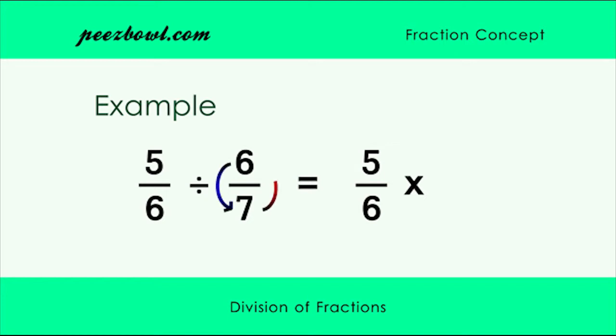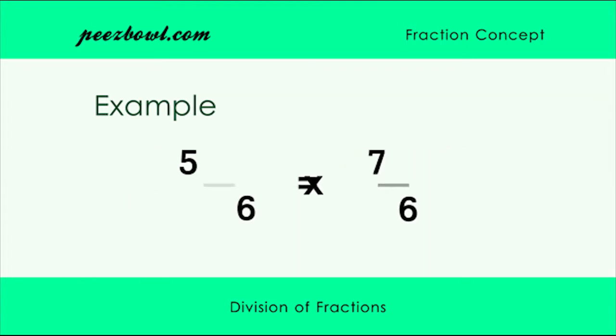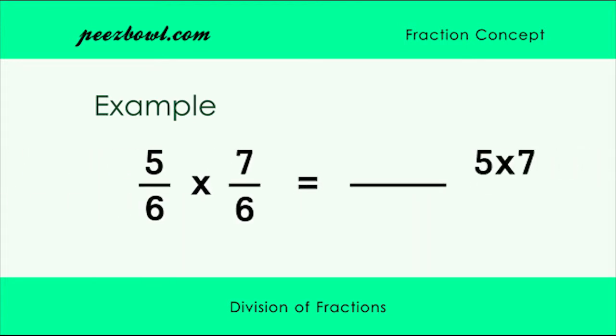this with the reverse of 6 upon 7 which is 7 upon 6. Therefore we are multiplying 5 upon 6 and 7 upon 6. The result of this multiplication comes as 35 upon 36.